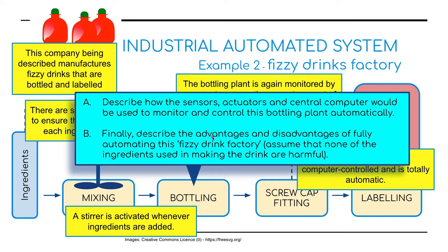A couple of questions: describe how the sensors, actuators, and central computer would be used to monitor and control this bottling plant automatically. And describe the advantages and disadvantages of fully automating this fizzy drinks factory.